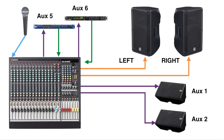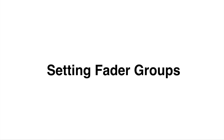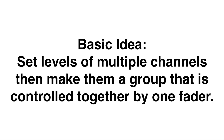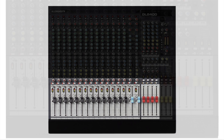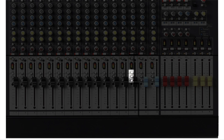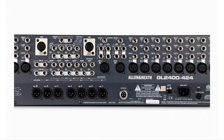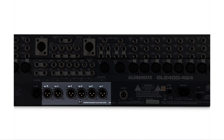Here again is our setup that we've described. Now let's talk about fader groups. The basic idea of a fader group is this: you set levels of multiple channels with faders, and then you combine them into a group that is controlled together as a unit by another master fader. If we look at our mixer from the top, the fader section is highlighted. Next to each fader is a series of buttons that we can assign groups. The first group is the left and right main section, the second assigns the fader to groups 1 and 2, and the third assigns to groups 3 and 4. If we look at the back of the mixer, these are the outputs that the faders will be sending through.